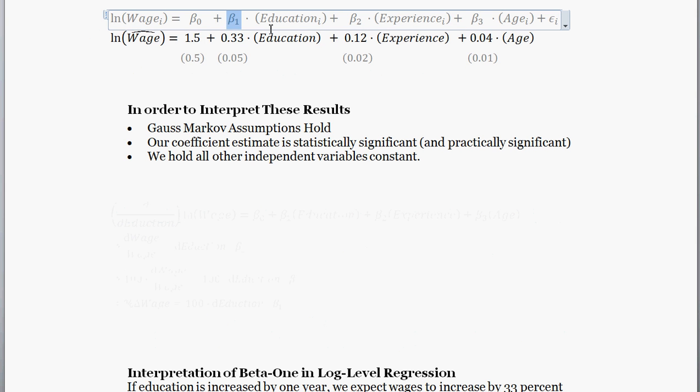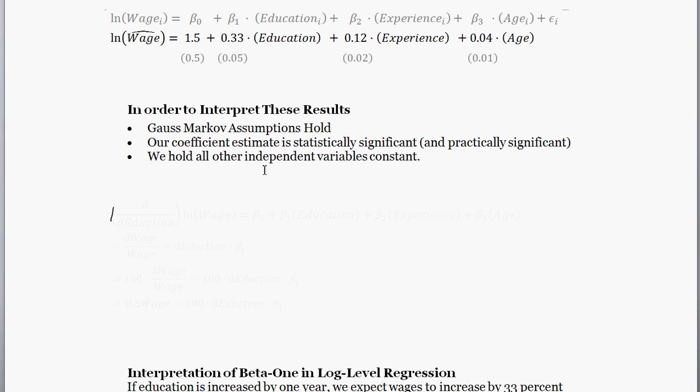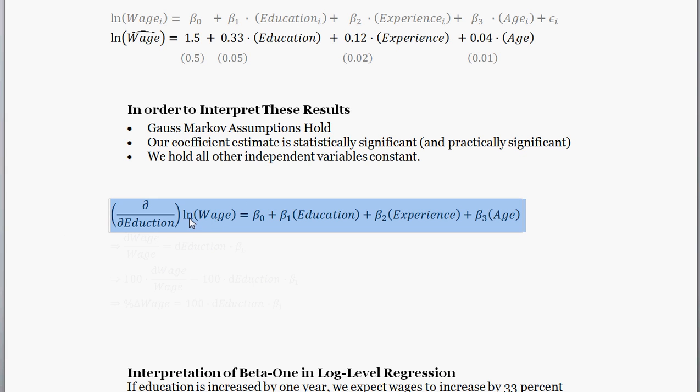Beta one definitely is going to tell us something about the effect of education on wages, but exactly how is it doing that? So to correctly interpret this, what we're going to do is we're going to take the differential of our model with respect to education. So that's what we're going to do here. Here's our basic model, log wages equals beta naught plus beta one times education plus beta two times experience plus beta three times age.